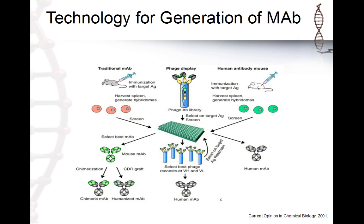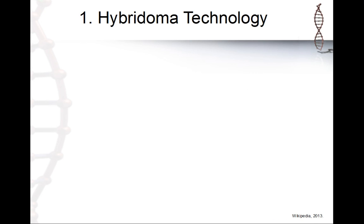With phage display you make a screen and select the best-fitting antibody targeting your antigen. Of course, there are also mice engineered to generate fully human antibodies. Let's come to one of the most important technologies — the one for which people received the Nobel Prize in Medicine.